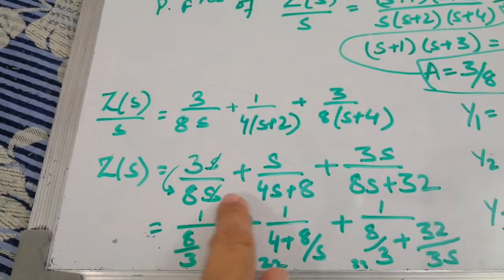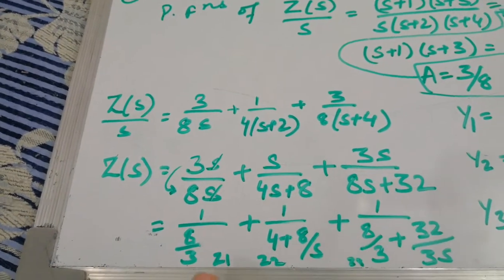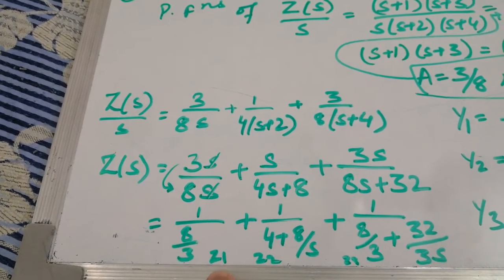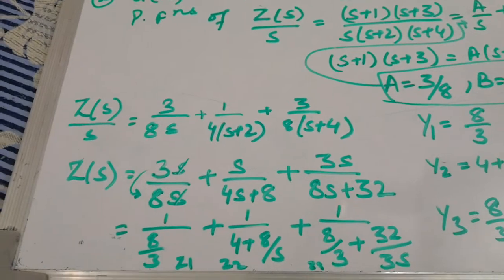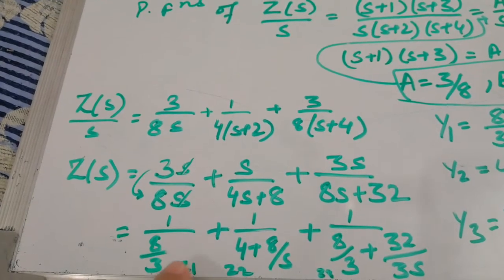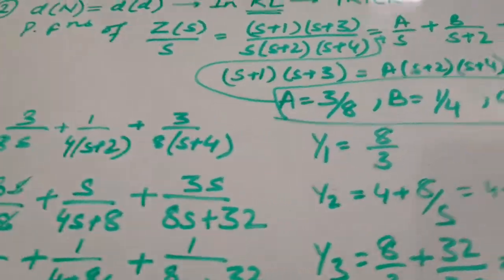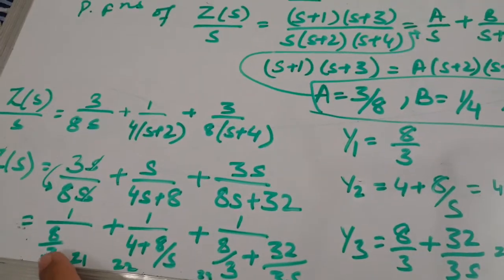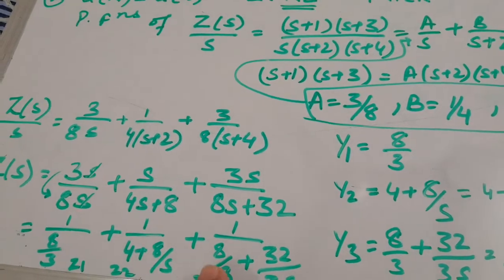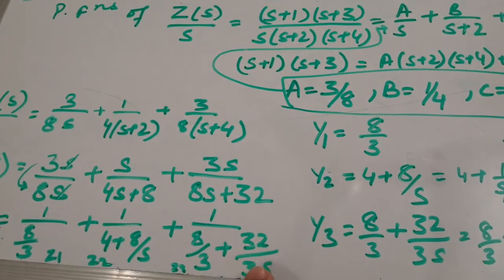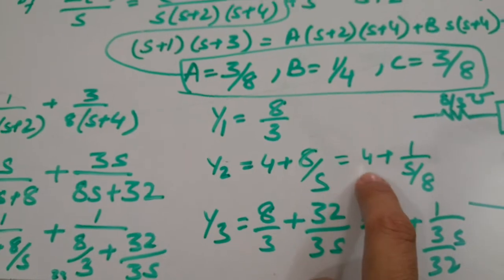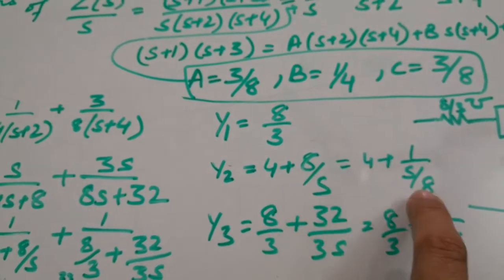Here s gets cancelled out and this s is multiplied in the numerator. So I have written here this term for Z1, this as Z2, and this is Z3. Since all these are of the form 1 over something, this denominator term will be equal to Y1, because Z1 equals 1 upon Y1. So my first term Y1 comes out to be 8/3, Y2 comes out to be 4 plus 8/s, and Y3 comes out to be 8/3 plus 32/3 upon s. I can write it in simpler form as 4 plus 1 upon (s/8 + 1/8).